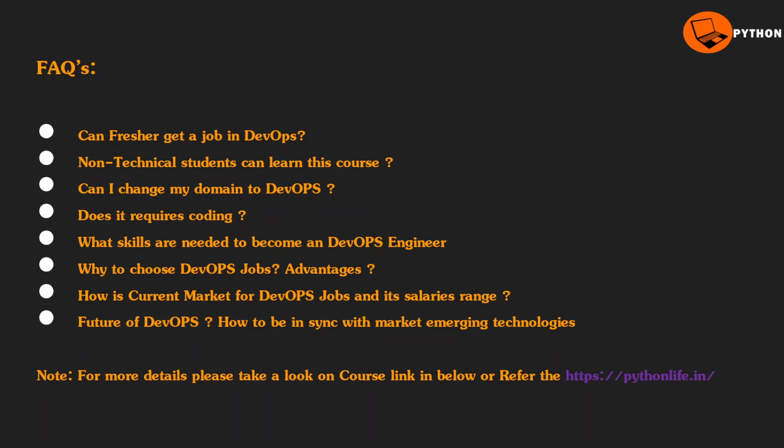With the right approach, your software can be ready and released to market in just one month instead of three months using normal tools. Emerging technologies will be aligned with DevOps. DevOps is like a warrior between developers, operations, and security teams — a collaborative entity that ensures right planning, right design, and a successful product build. For more details, refer to pythonlife.in and the demo video in the comment section.